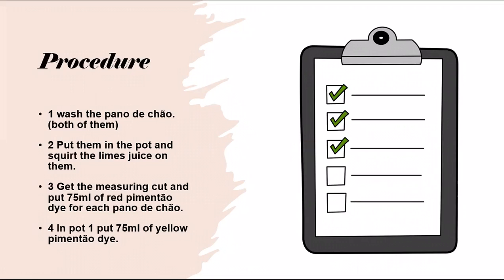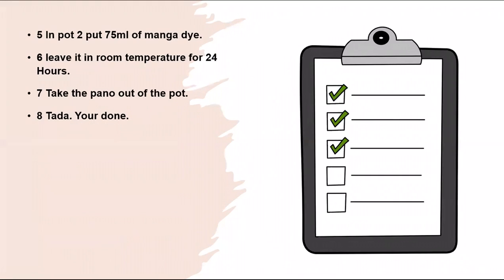Number four and five: Do the same thing, but in one pot put yellow pepper dye, and in the other put mango dye. Number six: Leave it at room temperature for 24 hours, take a picture to show how well you did, and you're done.